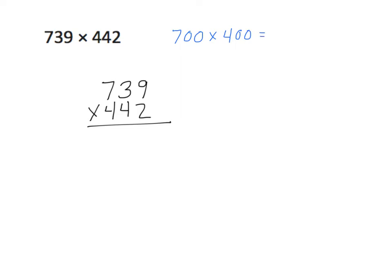We're going to multiply that out and put in the appropriate number of zeros. Now we'll put our comma in, and our answer should be pretty close to 280,000. It's always a good procedure — it only takes less than a minute to do your rounding and estimating, and it's a good way to make sure that your answers are fairly close to accurate.